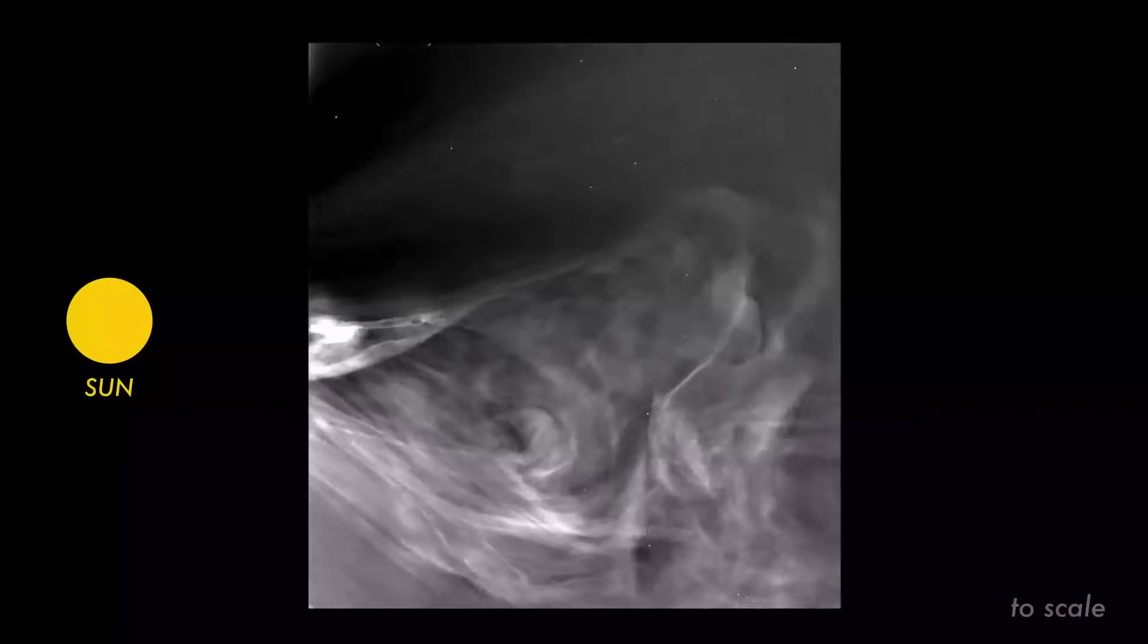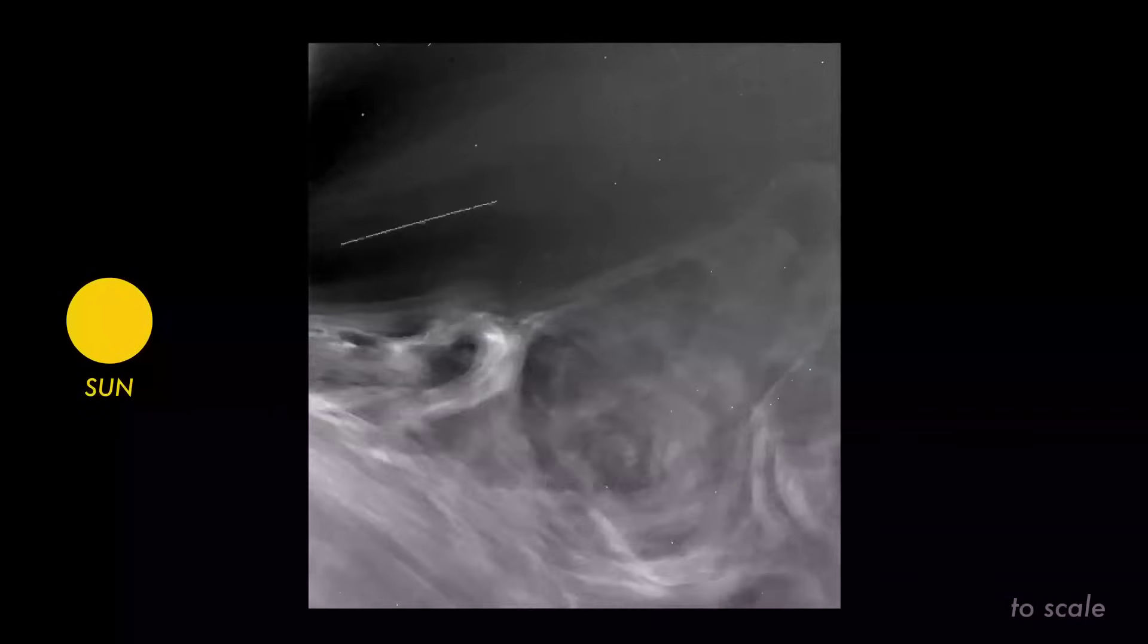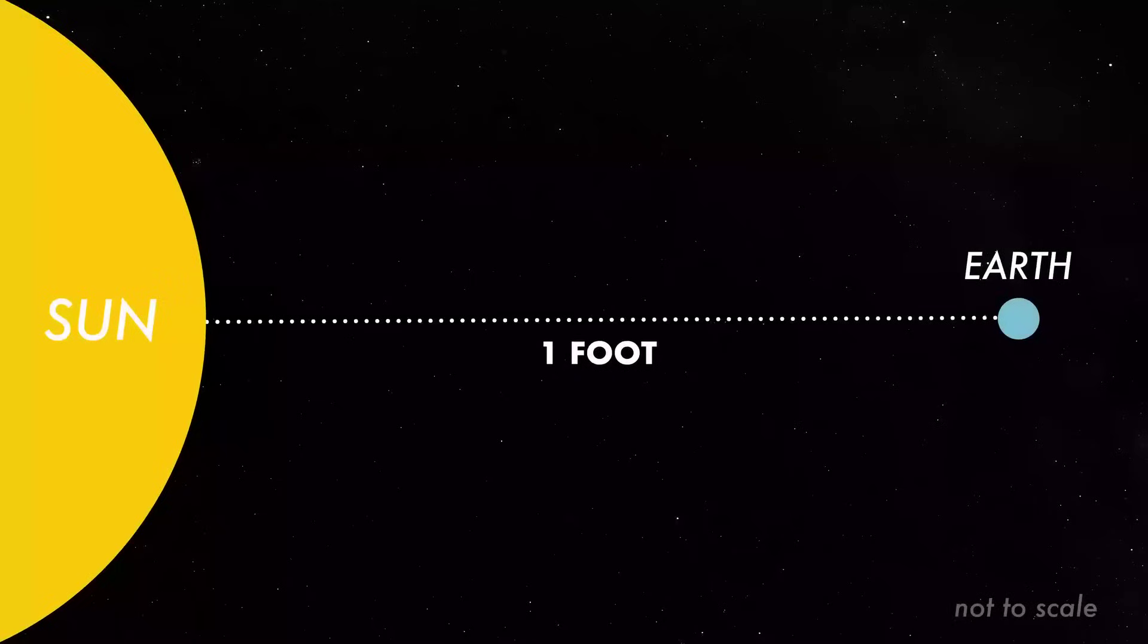When it took these images, the spacecraft was only 3.8 million miles from the sun's surface. If Earth and the sun were one foot apart, Parker Solar Probe was about half an inch from the sun.